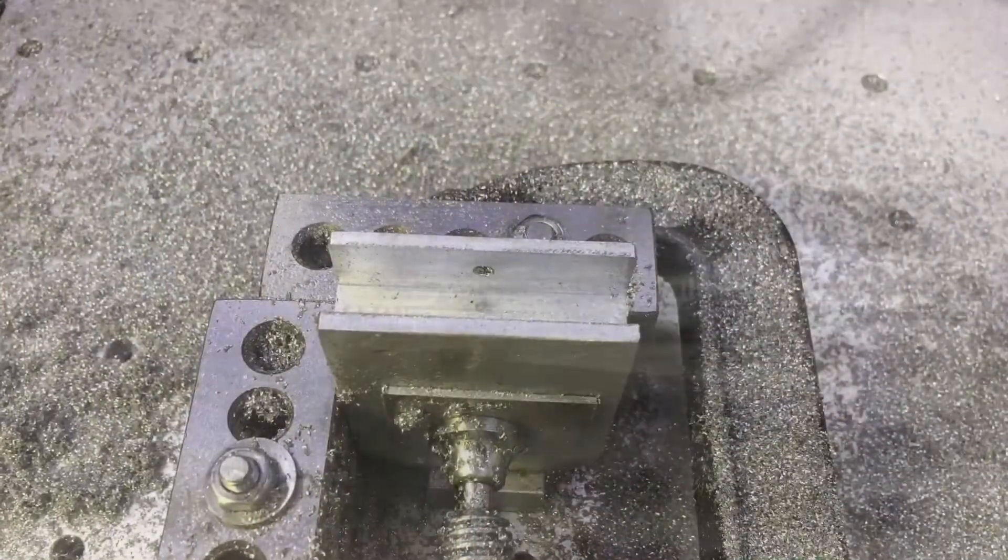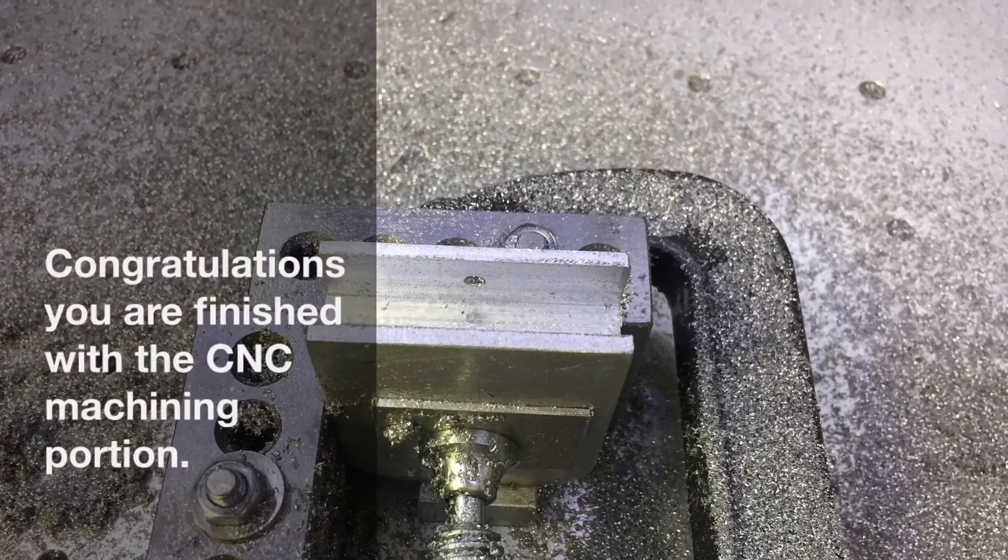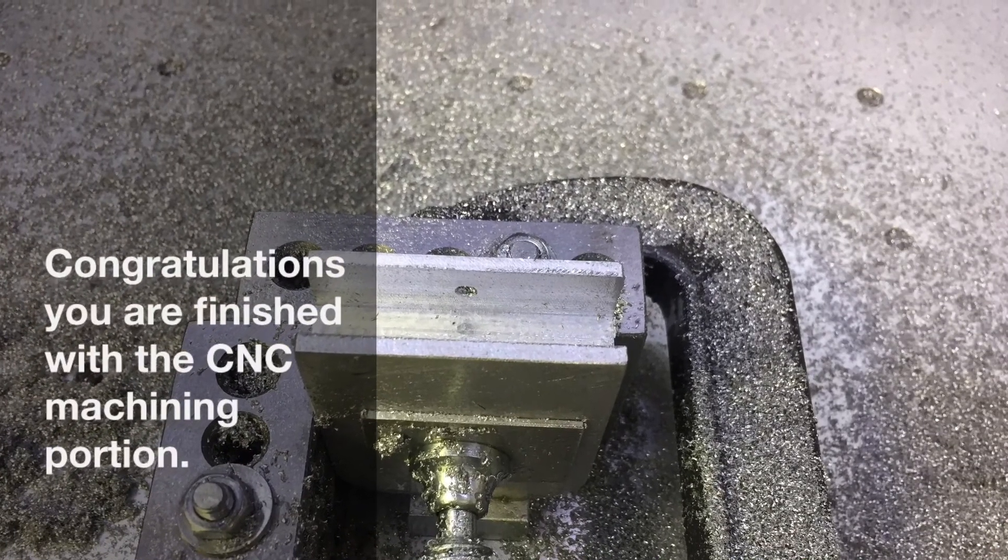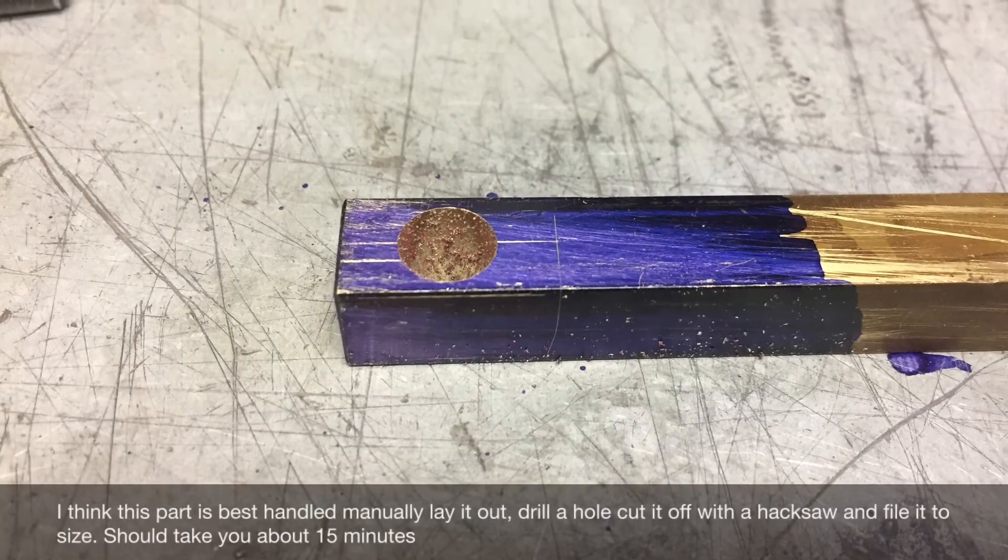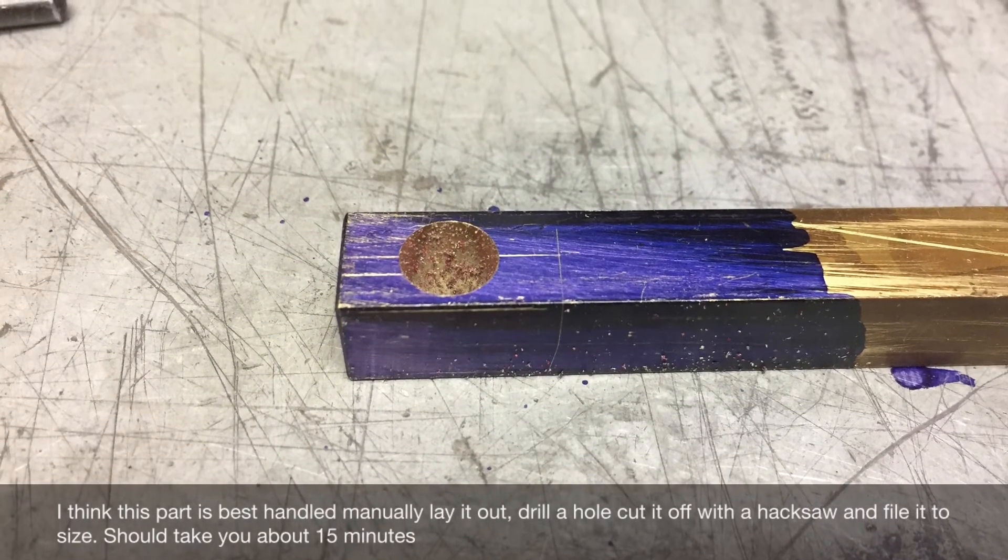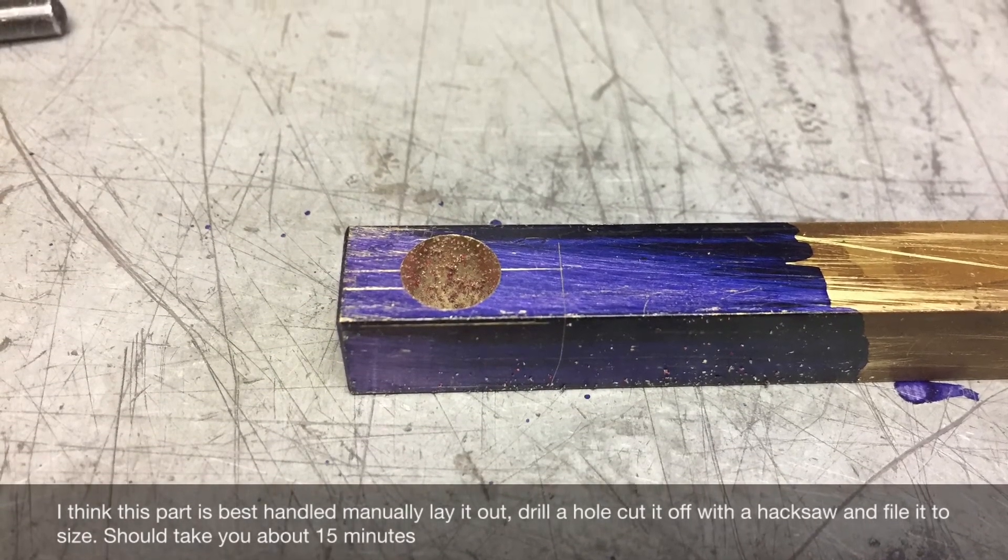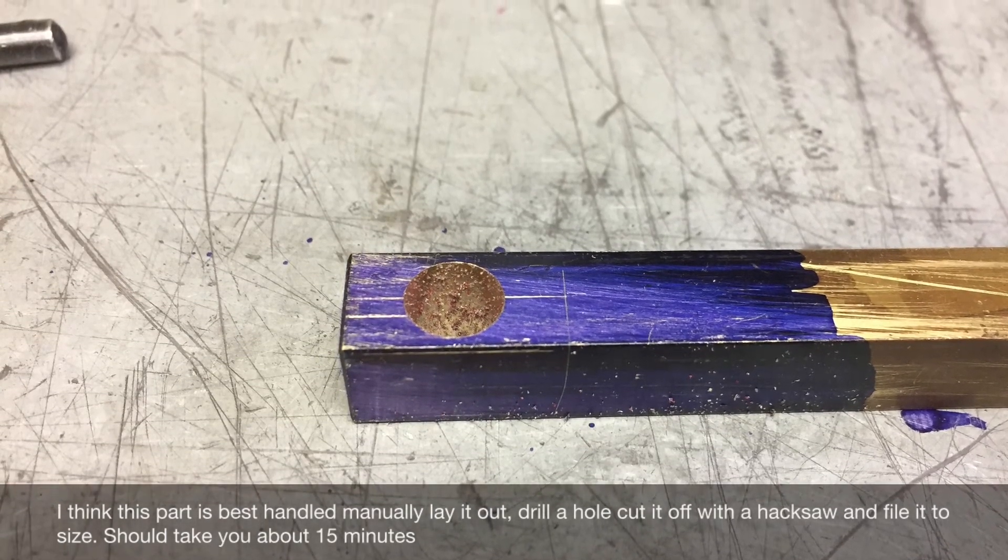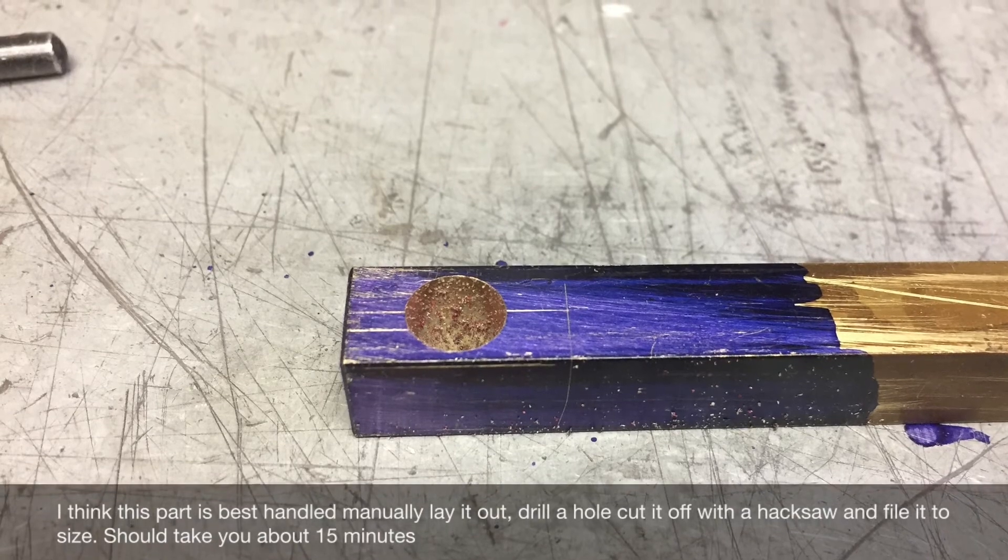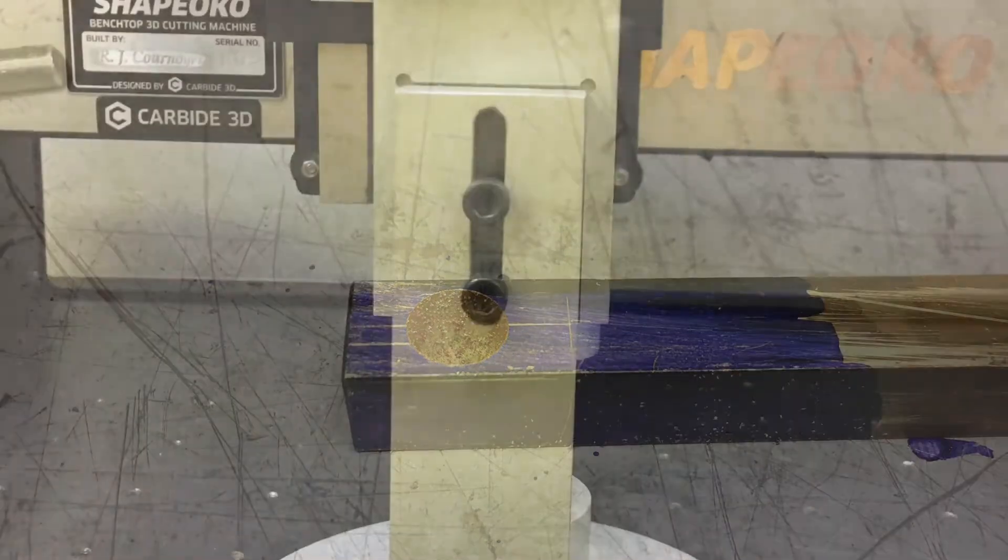Tolerance is pretty wide open. If you're a little bit tight, a file makes it a little bit bigger. Try not to make parts oversized. Last is the brass slide - I laid it out, drilled it by hand, cut it off with a hacksaw, and then filed it to clean.